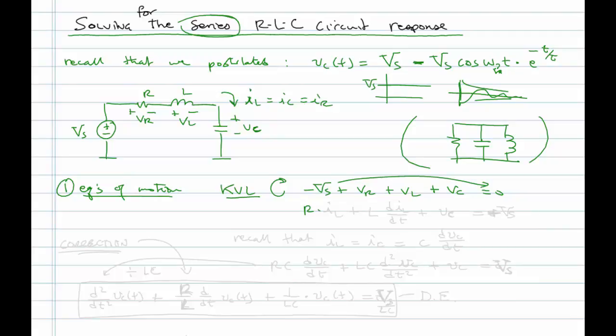So we have minus Vs plus Vr plus Vl plus Vc equals zero. I'm going to throw the Vs on the other side. Vr is just R times i, I'll write iL, plus Vl is L di/dt plus Vc. Now I'm going to write this in terms of Vc. Recall that iL equals iC, which we can express in terms of the capacitor voltage, C dVc/dt. So we plug that in, and we'll have RC dVc/dt plus LC second derivative of the capacitor voltage with respect to time plus Vc.